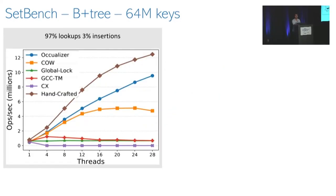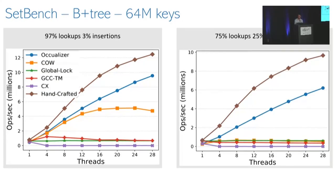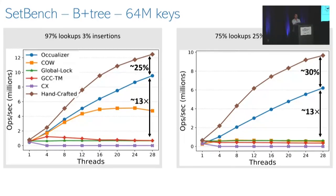However, when we mix some insertions into the tests, apart from OCCUalyzer and copy-on-write, all mechanically transformed trees show bad scalability. OCCUalyzer shows better scalability than copy-on-write. When we increase the number of insertions, OCCUalyzer is the only mechanical transformation showing good scalability — even though it is about 25 to 30% worse than the handcrafted tree, it is over 13 times better than all other mechanical transformations when running with 28 working threads.